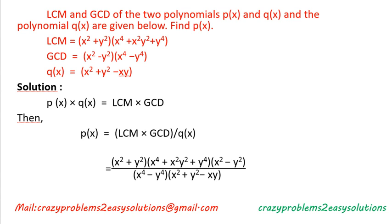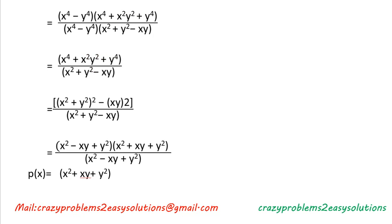After cancelling common factors, we are left with (x⁴ + x²y² + y⁴) ÷ (x² − xy + y²). Expanding using the identity, x⁴ + x²y² + y⁴ = (x² − xy + y²)(x² + xy + y²). Cancelling (x² − xy + y²), the remaining polynomial p(x) = x² + xy + y².